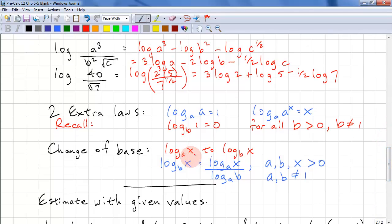We can change the base of a log. Log a of x, changing it to log b of x. We simply do log b of x divided by log b of a. And again, we have all these restrictions. a, b, and x must be greater than 0. a and b does not equal 1.